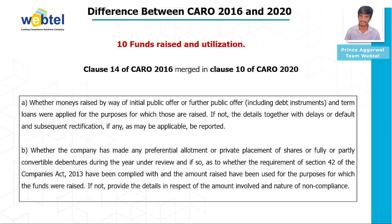Clause ten is Fundraise and Utilisation. Clause 14 of CARO 16 is merged with Clause 10 of CARO 20. The auditor must report whether money raised by way of initial public offer or further public offer and term loans were applied for the purpose for which they were raised; if not, details including delays or defaults and subsequent ratification must be reported. Whether the company has made any preferential allotment, private placement of shares, or fully or partly convertible debentures during the year must also be reported, and whether the requirements of Section 42 of the Companies Act 2013 have been complied with and the amount raised was used for the stated purpose; if not, details of the non-compliance must be provided.